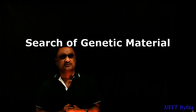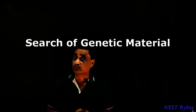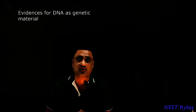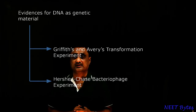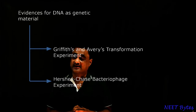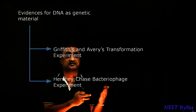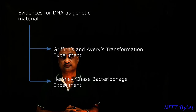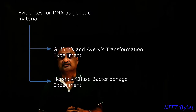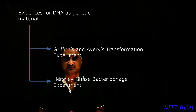The story about the search of the genetic material way back in the year 1928 was started with the experiment of Griffith. So there are two milestone experiments — one was done by Griffith, and the second was Avery, MacLeod and McCarty, done in the year 1944. And later on in 1953, another experiment was done by Hershey and Chase, which finally conclusively proved that DNA is the genetic material.